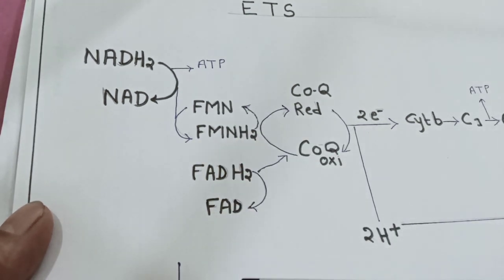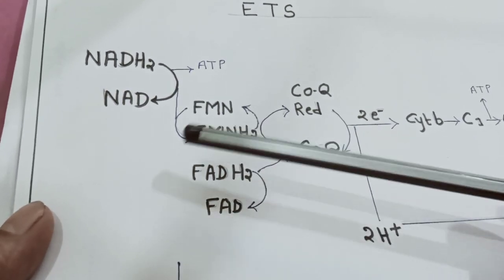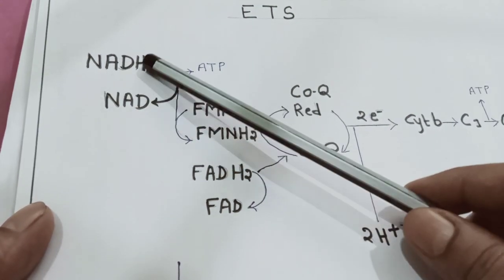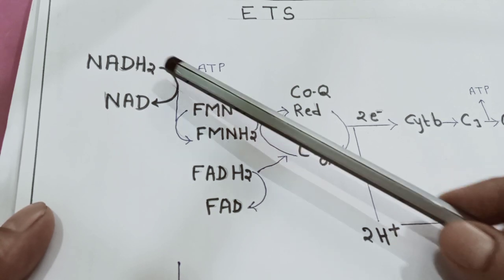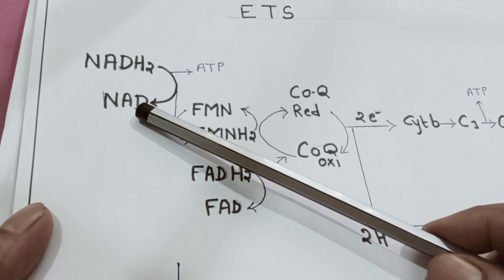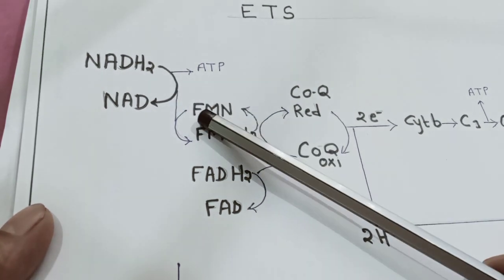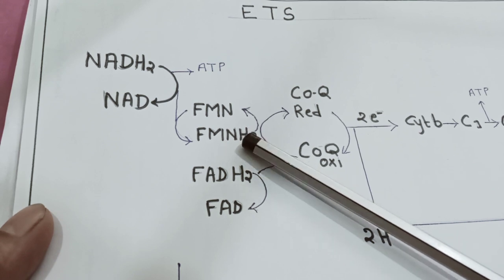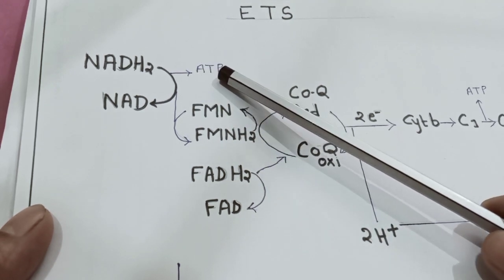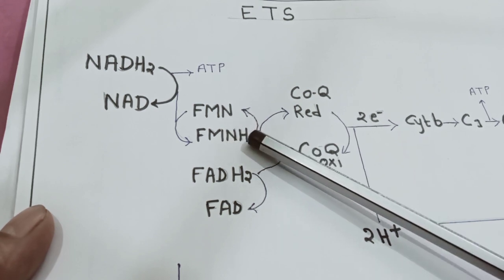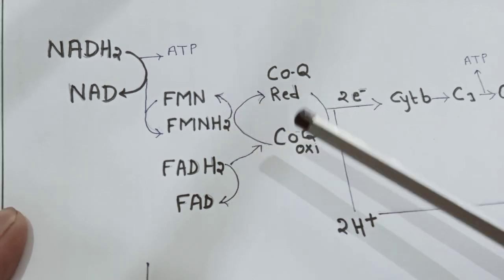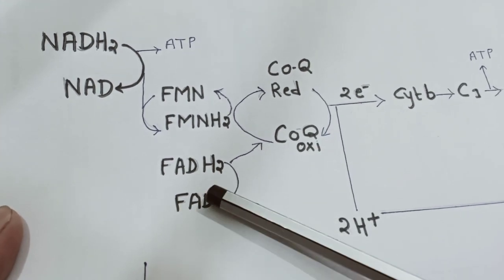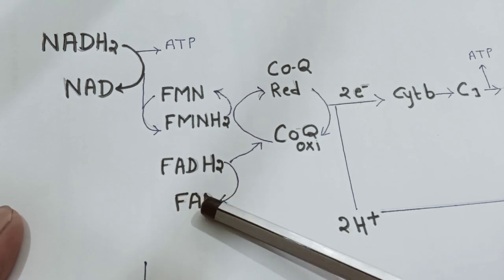NADH2 and FADH2, produced during respiration, are now converted to their oxidized forms. When NADH2 releases its hydrogen, it converts to its oxidized form NAD. This hydrogen is received by coenzyme FMN, converting it to FMNH2. During this process, ATP is released. FMNH2 then releases hydrogen, which is received by coenzyme Q, present in the F1 particle.